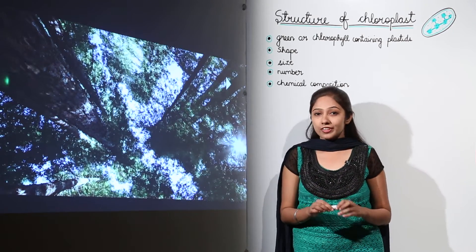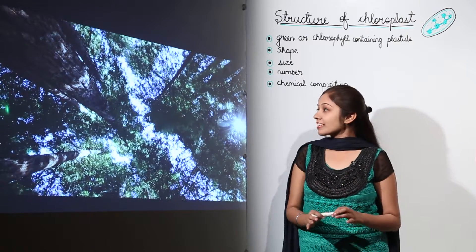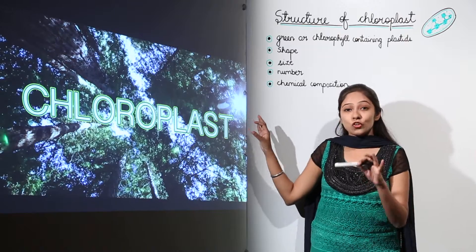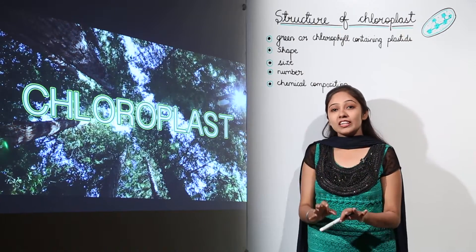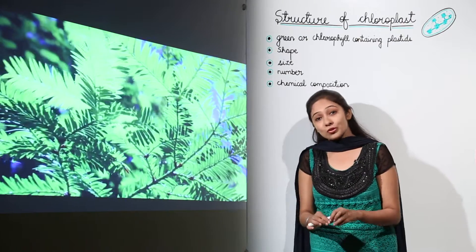Many things contribute to life on Earth, but the most important structures are chloroplasts. These chloroplasts help plants carry out photosynthesis.